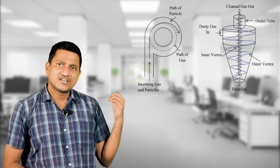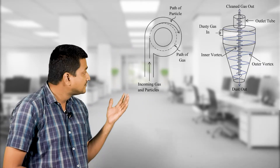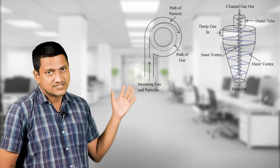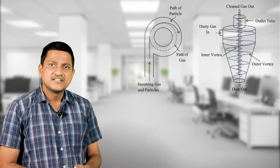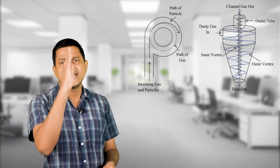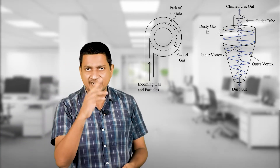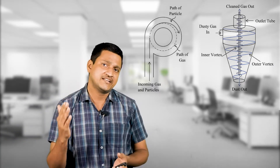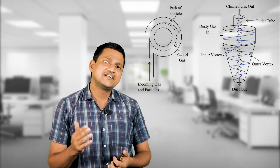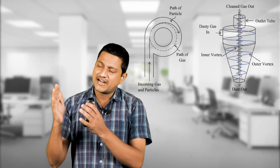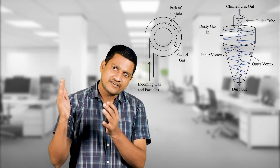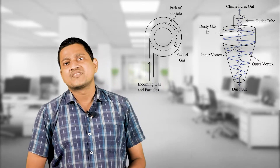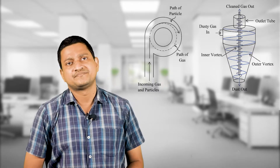Looking at the picture of the cyclone separator: gas enters in a rotating flow, and due to this rotation, the particulate materials adhere to the surface of the wall and fall to the bottom. That is the process of cyclone separation.